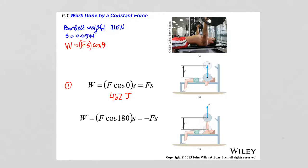With the angle at zero, F cosine of zero times S equals F times S, giving 462 joules of work done on the barbell as it is pushed up. As the barbell comes down, the weightlifter is still applying force upward, but the displacement is downward. The angle between the force vector and the displacement vector is 180 degrees, so F cosine of 180 times S equals minus F times S, giving negative 462 joules. The magnitude is equal in both parts of the motion, but with opposite signs — so it is very important to pay attention to the angle between the force and displacement vectors.